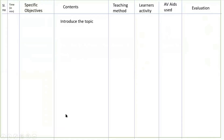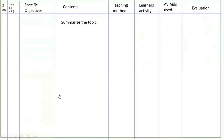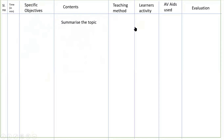After finishing all specific objectives, the final section is the summary — recapitalization. You summarize the topic. For the introduction and summary rows, there is no need to write any specific objectives in the specific objectives column. In the content column, write only the summary: for example, 'Personal hygiene is very important in your personal life; you have to maintain good health conditions.'